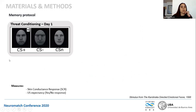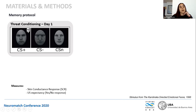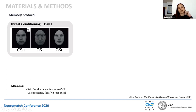Our threat conditioning consists of three male faces: two with angry expressions and one with a neutral expression. One of the angry faces — counterbalanced between participants — is paired with an unpleasant tone. We call the face paired with the tone the CS+ and the angry face with no tone the CS−. The measures we take are skin conductance response and US expectancy via an external keypad, as a yes/no response whether the sound is coming or not.